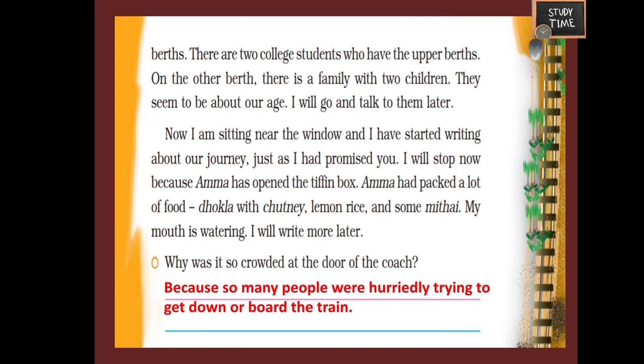There were two college students in the upper berth. On the other berth there was a family with two children. Omina thought they would be her age and she thought she would go and talk with them later. She was sitting near the window and started to write about her journey as she had promised. But she says she will stop writing because her amma opened the tiffin box.